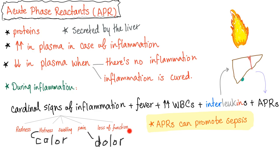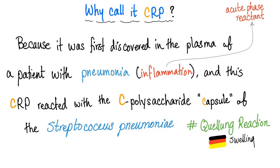That's why the name of my channel is Medicosis Perfectionalis, where medicine just makes perfect sense. Why do we call it CRP? Because it was first discovered in the plasma of a patient with pneumonia — and pneumonia is an inflammation, so it makes sense that CRP is an acute phase reactant. We don't say 'pneumonitis' because it's heavy on the tongue, so we say pneumonia. This CRP reacted with the C polysaccharide in the capsule of Streptococcus pneumoniae — remember the Quellung reaction? Quellung is German for swelling. So we called it C-reactive protein.